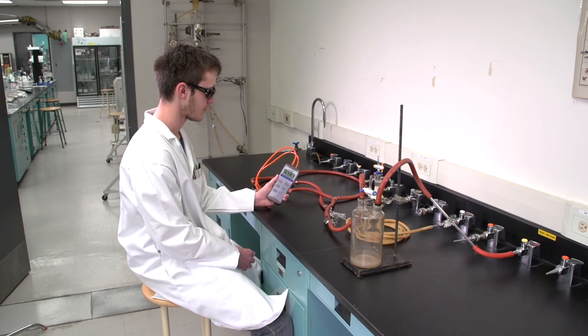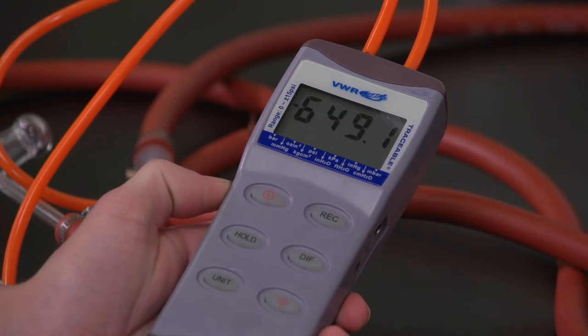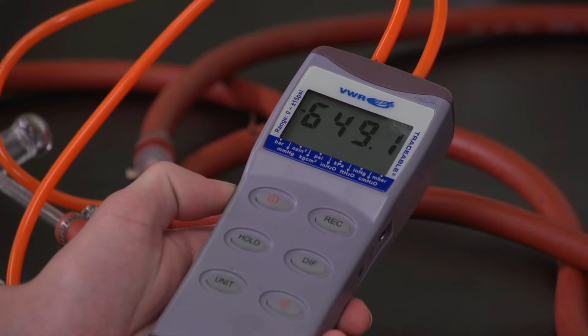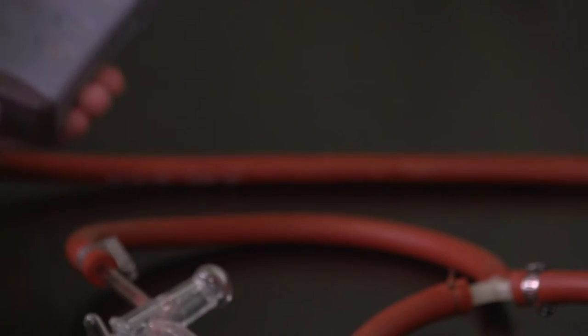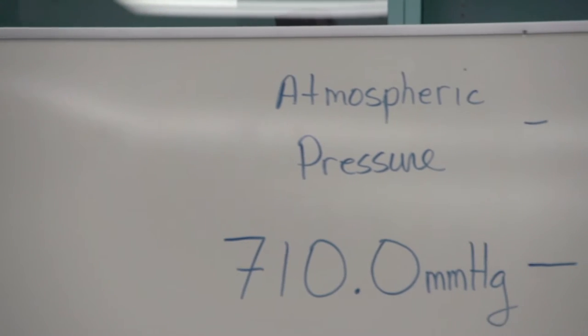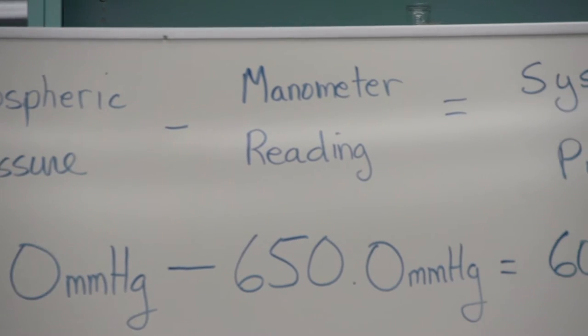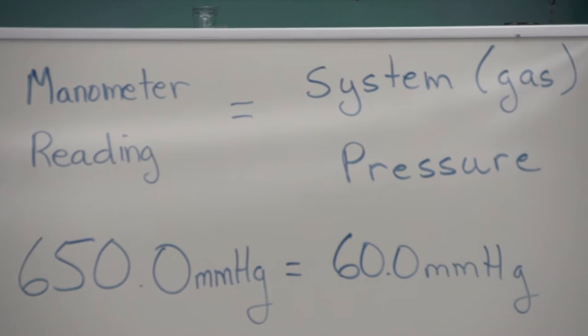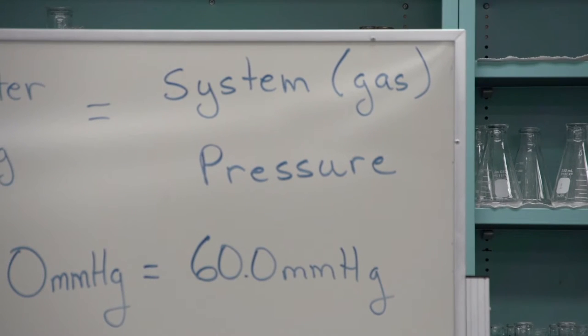For experiment two, a manometer will be used to determine the pressure in the system. The reading on the manometer is the amount the pressure has been reduced below atmospheric pressure. If the atmospheric pressure is 710 mmHg and the manometer reads 650 mmHg, then the pressure in the system is 60 mmHg.